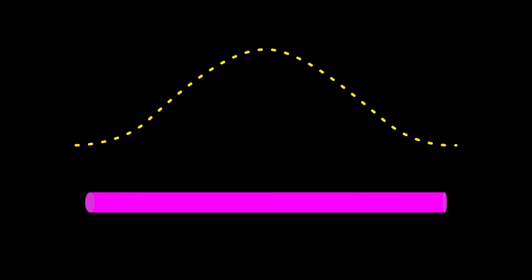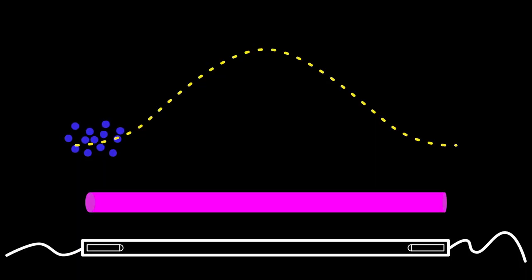The laser rod is like a hill. At first, all the ions are at the bottom of the hill, but if you're willing to expend some energy, in this case a massive pulse of light from a flash tube, you can move them to the top.